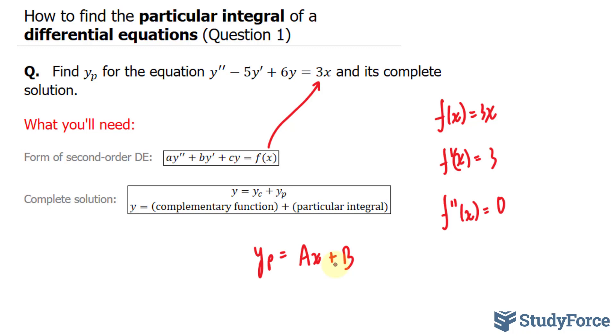To find these constants in y sub p, we use the method of undetermined coefficients. We substitute yp and its first and second derivative into the differential equation. We'll then equate coefficients of like terms and solve for the constants. Here's what I mean.